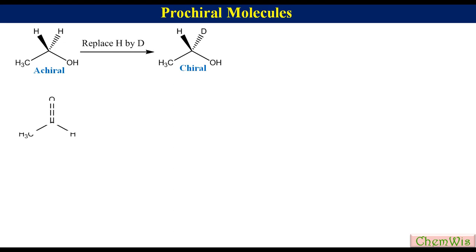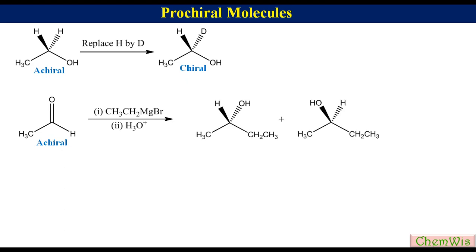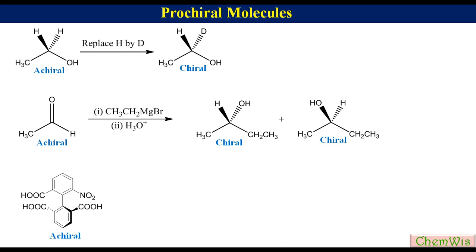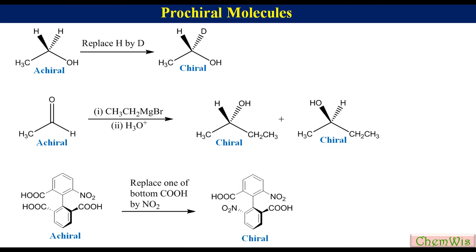Acetaldehyde is also achiral. If we allow it to react with ethyl magnesium bromide, it will give 1-propanol, which is chiral. So acetaldehyde is a Prochiral Molecule. Similarly, in a biphenyl system, which is achiral because the bottom ring has a vertical plane of symmetry, replacing one of the two carboxylic acid groups of the bottom ring by nitro gives a chiral molecule. So this is also a Prochiral Molecule.